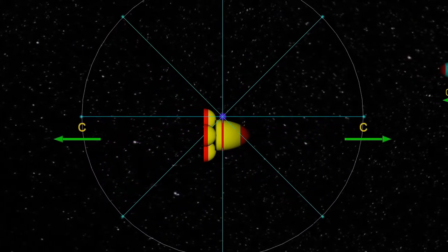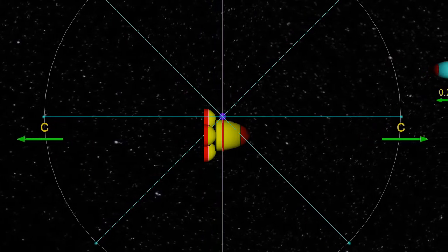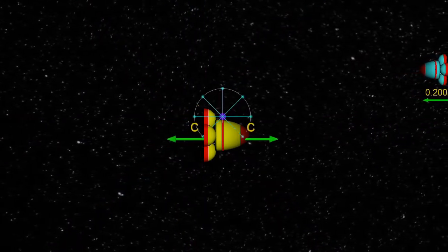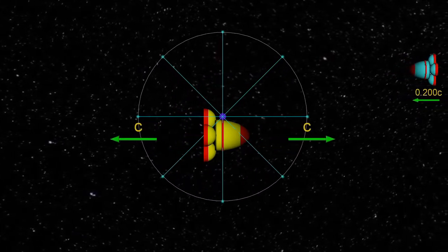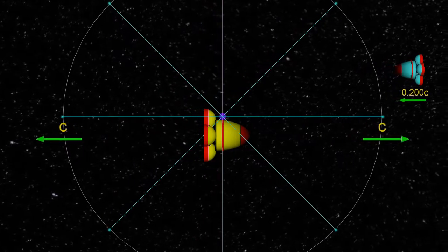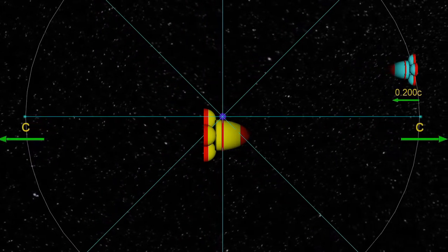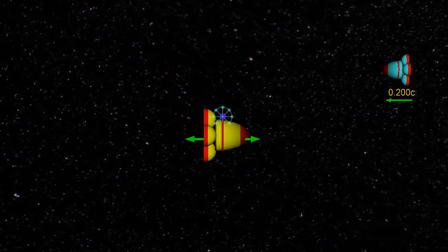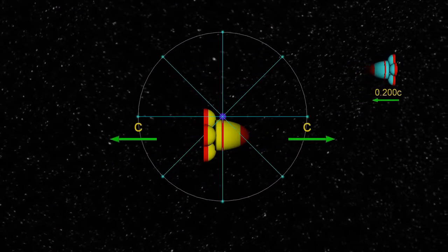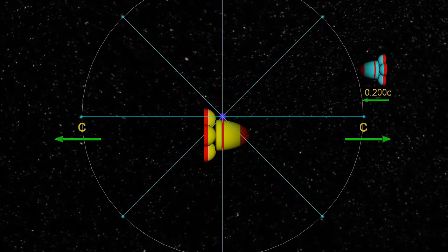In the distance, there's a blue spacecraft traveling along at 0.2c. All the occupants on that spaceship feel stationary, just like we feel stationary. And when they measure the speed of the yellow spacecraft, they measure it as traveling at 0.2c relative to them.